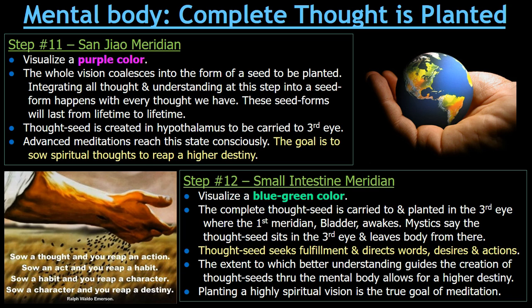Just like here to the right we see the whole world in the hand of a person — this is the idea where you've taken your whole unified vision from Step 10, the Kidney Meridian, and condensed it down to a concentrated form.